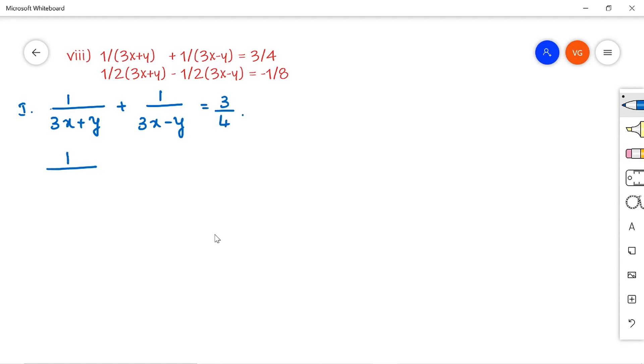The second equation is 1 by 2 into 3x plus y minus 1 by 2 into 3x minus y is equal to minus 1 by 8.